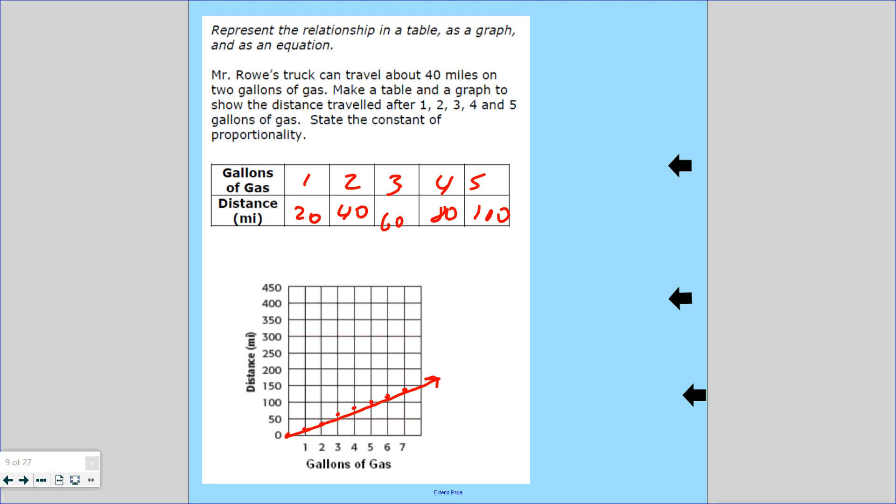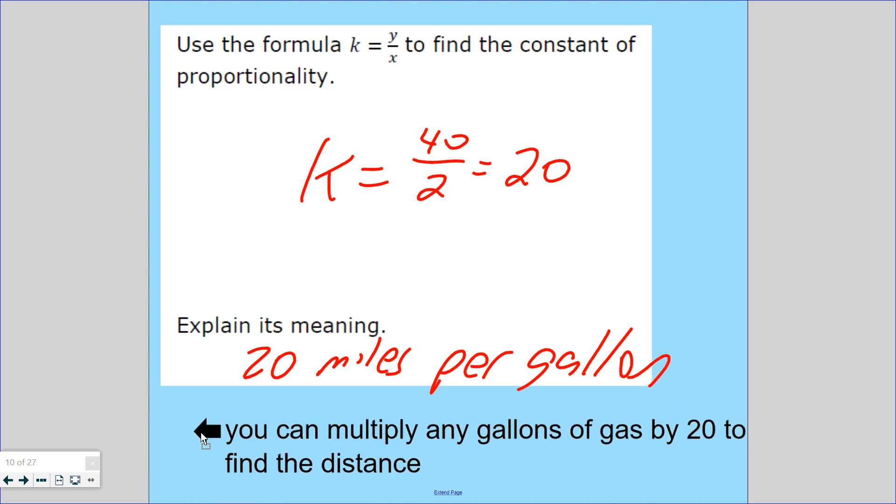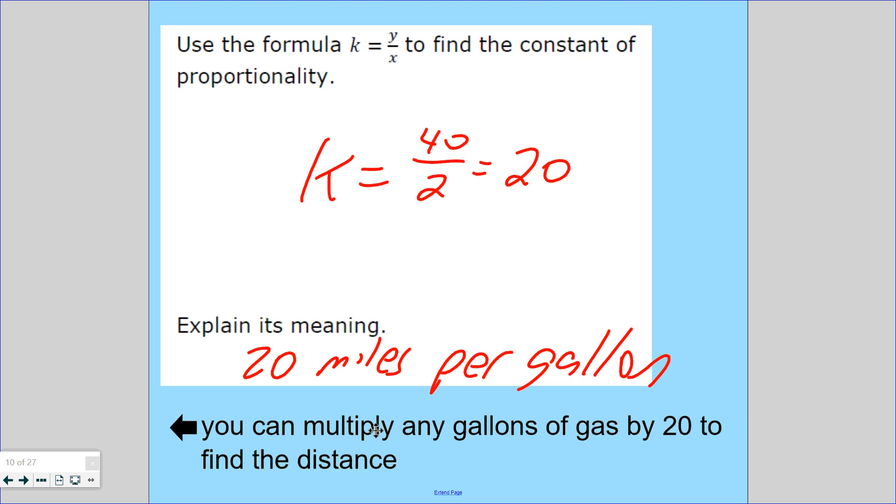So now let's state the constant of proportionality. Let's see what it says right here in the arrows. So use the formula k equals y over x to find the constant of proportionality. So k stands for constant of proportionality. He travels 40 miles with 2 gallons of gas, that is 20. So the constant of proportionality is 20. What does that mean? Explain its meaning. That means he can travel 20 miles per gallon. That means if you know how many gallons of gas Mr. Routh puts in the car, you can multiply it by 20 to find the distance you can travel.